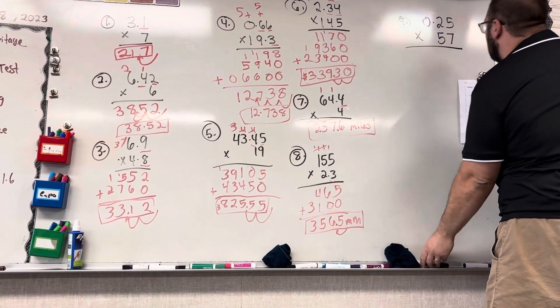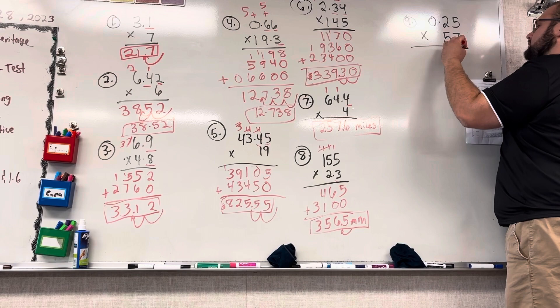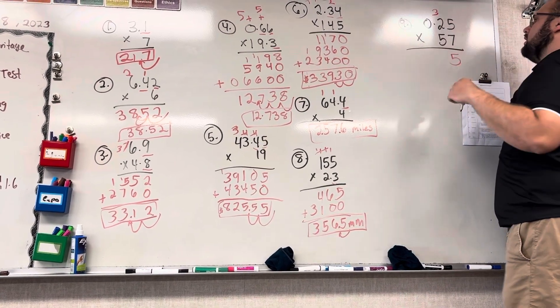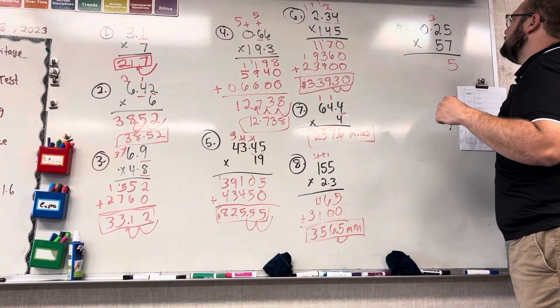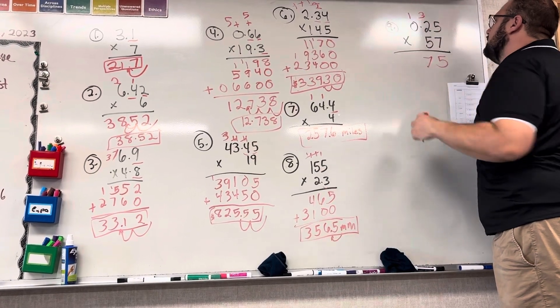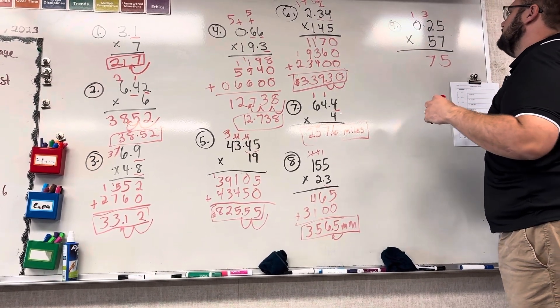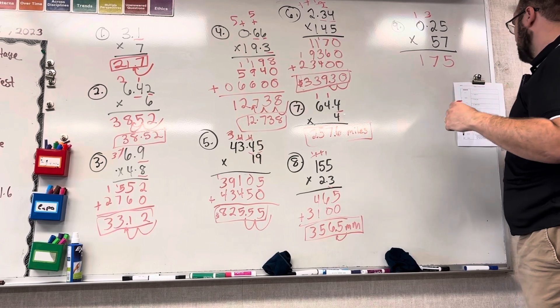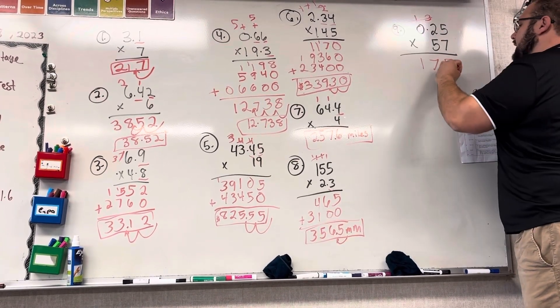7 times 5 is 35, carry the 3. 7 times 2 is 14, plus 3 is 17. 7 times 0 is 0, plus 1 is 1. Cross these out, add a 0.